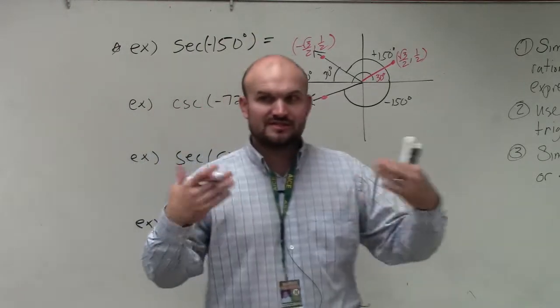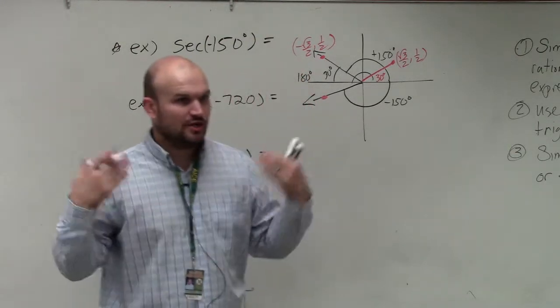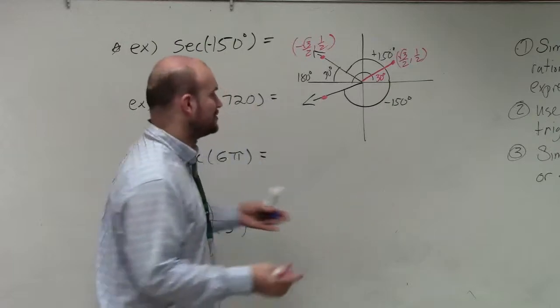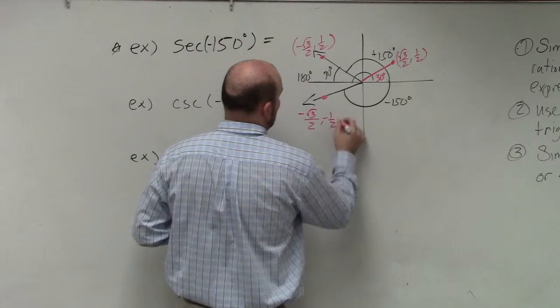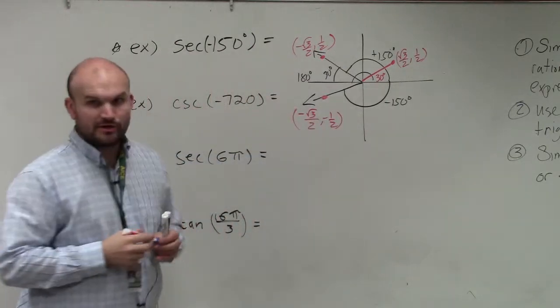This is why I'm giving you guys a unit circle, so you can start seeing these connections, so you don't feel like you have to always have the unit circle right in front of you. So this angle is negative square root of 3 over 2 comma negative 1 half.